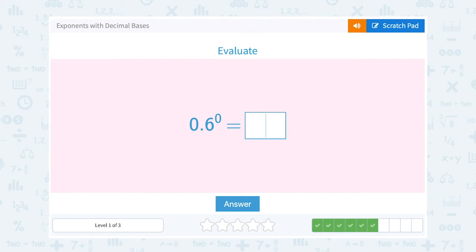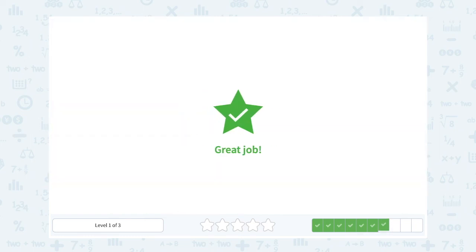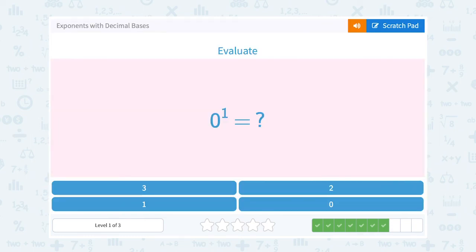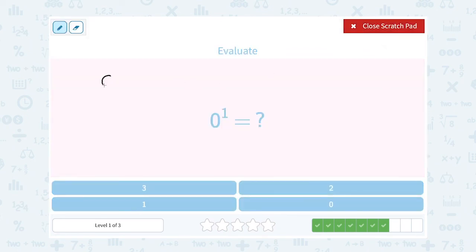0.6 to the 0 power. Anything to the 0 power is 1. 0 to the first power. Well this means to write 0 out one time, well that would just give us 0.